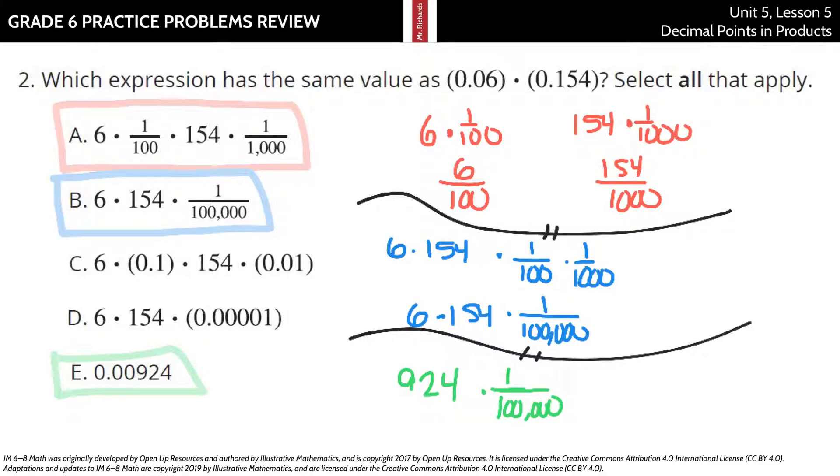Here in B, it's taking it that next step. It's saying, okay, I have one-hundredth and a thousandth. If I multiply those two numbers together, I get one one-hundred-thousandth. And then the six times one fifty-four, so B works.